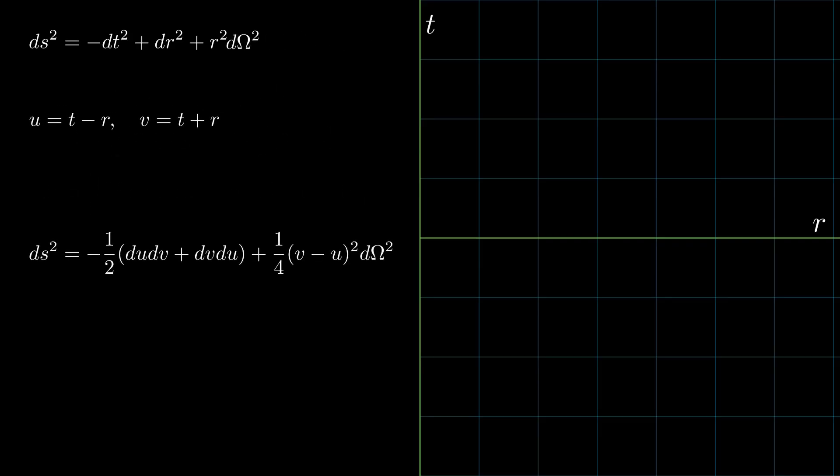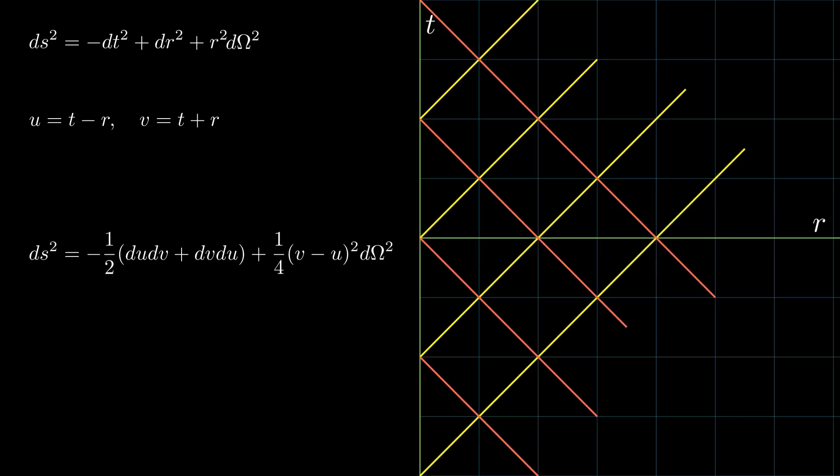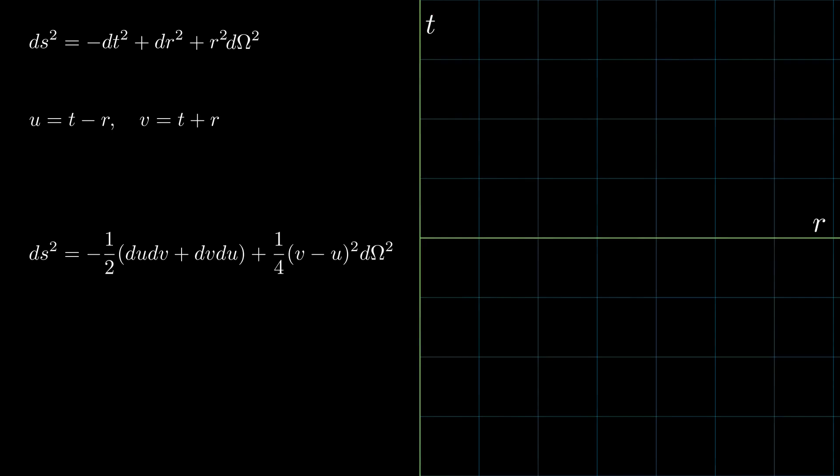If we keep u and v constant, on our original t versus r diagram, we can show lines of constant u and v. The light cone structure shows that the coordinate axes themselves are null, giving rise to the term null coordinates.